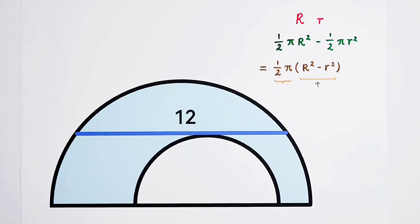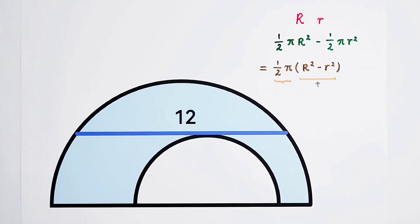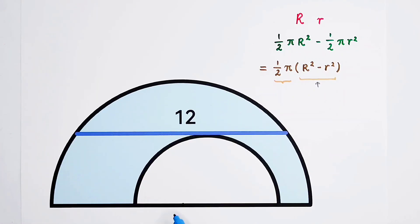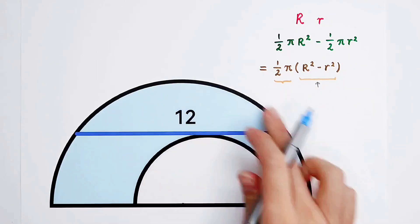For constructing the radius of the big semicircle, we should first find its center. Here is the center of the big semicircle. Now, let's find the capital R — the radius of the big semicircle.